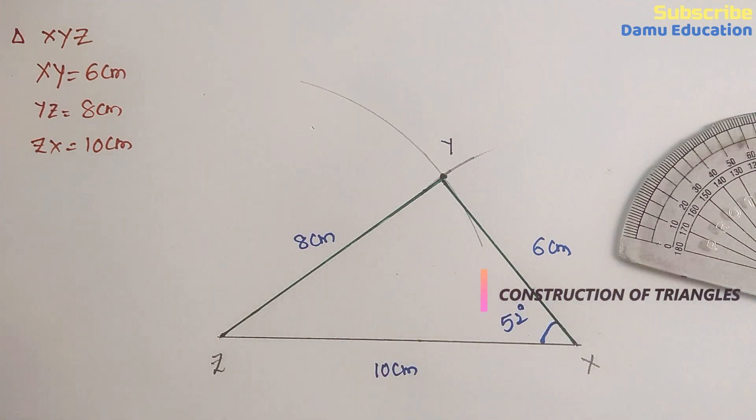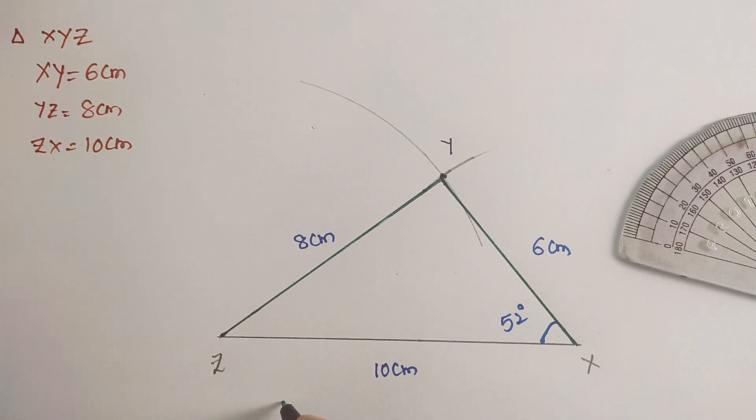It is 52 degrees. And which type of triangle are they asking? Here ZX, XY, and YZ all are different measurements. Which type of triangle is it? All sides are different side lengths, so that is a scalene triangle.